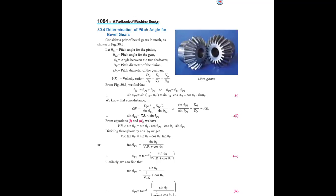The cone distance OP = dp/2 ÷ sin θp1, and similarly for the gear OP = dg/2 ÷ sin θp2. From this, sin θp2 / sin θp1 = dg/dp = VR, so sin θp2 = VR·sin θp1. Substituting and dividing both sides by cos θp1, we get VR·tan θp1 = sin θs − cos θs·tan θp1, which rearranges to: tan θp1 = sin θs / (VR + cos θs).